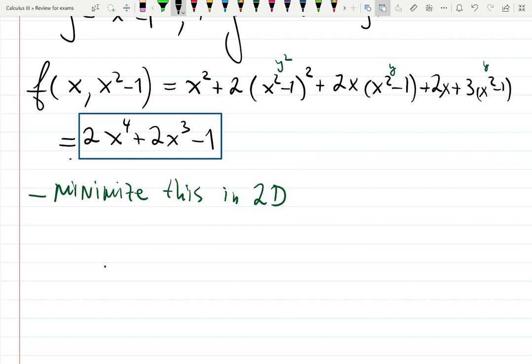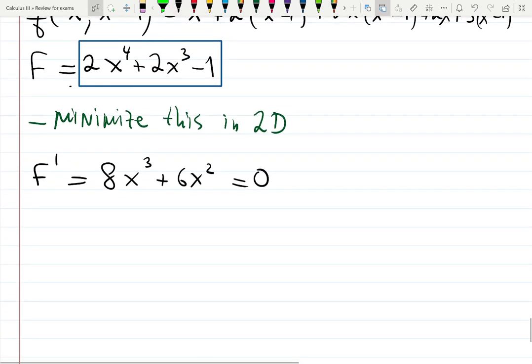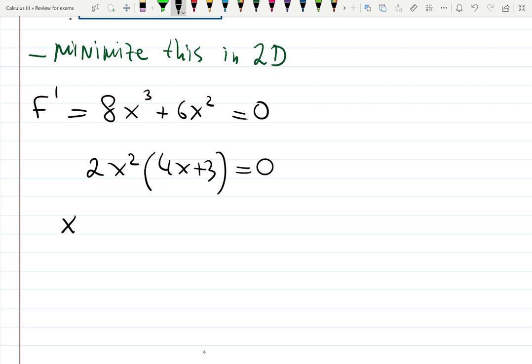Capital F prime will be, it's not a partial derivative anymore. We need to differentiate it using calculus one or two material. We're going to find minimum of this function in 2D. It's 8x cubed plus 6x squared equals zero. Factor out 2x squared: 4x plus 3 equals 0. I'll get three solutions: x equals plus and minus zero, and then 4x plus 3 equals zero gives you the solution minus three quarters.